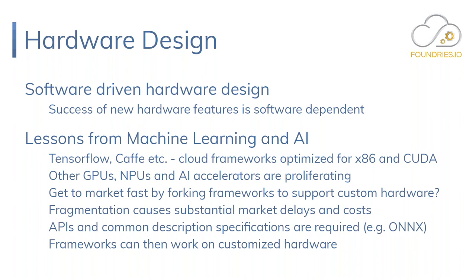The success of new hardware features is always software dependent. Lessons from the rise of machine learning and AI: frameworks like TensorFlow and Caffe were originally developed as cloud frameworks running on big performance computers from Google, Amazon, and Facebook. These frameworks were optimized for machine learning and executed on x86. NVIDIA also invested in getting GPU support through CUDA — their proprietary way of leveraging GPUs, which are very good at machine learning algorithms.